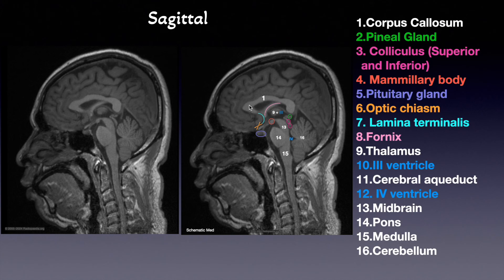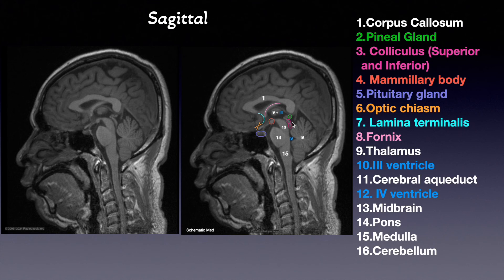Let's start from the back. We can see the pineal gland here — the main function of the pineal gland is to secrete melatonin. Next, we can see two structures — not very clearly depicted, but very important: we call them colliculi, superior and inferior. The superior colliculi play an important role in the visual pathway, while the inferior colliculi are important in the auditory pathway.